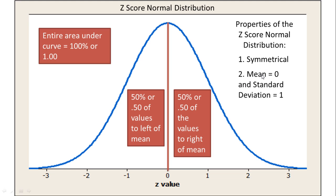Next, we can see that the mean of a z-score distribution is equal to zero, which I just said a minute ago. So the mean is equal to zero and the standard deviation is equal to one.